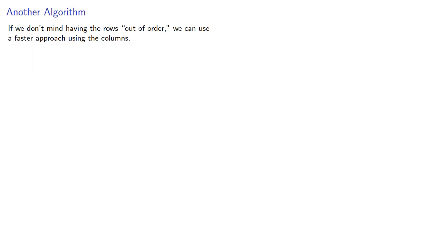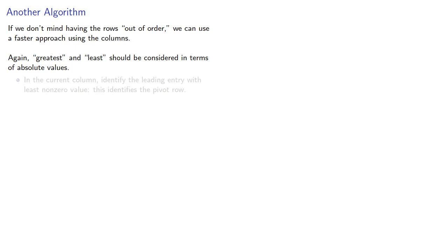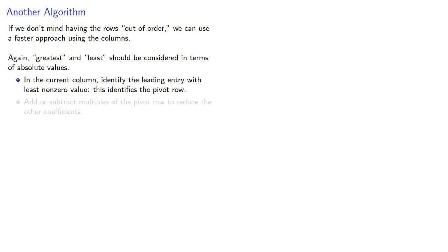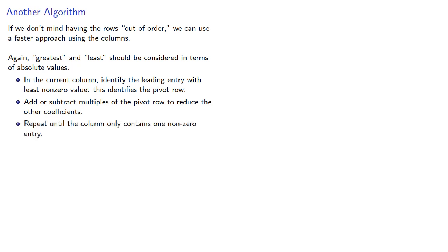If we don't mind having our rows out of order, or equivalently if we don't mind using row swaps, we can use a faster approach by using the columns. Again, greatest and least should be considered in terms of absolute values. So our algorithm, if we focus on the columns: in the current column, identify the leading entry with least non-zero value — this will identify the pivot row. Add or subtract multiples of the pivot row to reduce the other coefficients, and then repeat until the column only contains one non-zero entry, then move on to the next column.